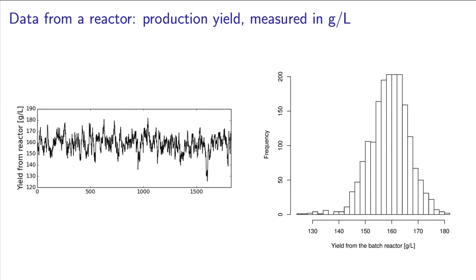If I just told my boss the average yield is 160 grams per liter, that single number only gives some idea of the center value, but it is not a complete description. The boss's next question should be: what is the minimum or the maximum that could be produced? What is the typical spread or the range of the data?